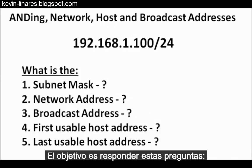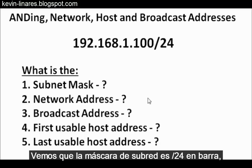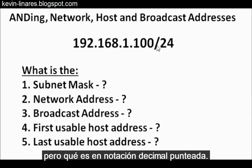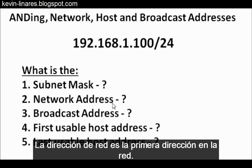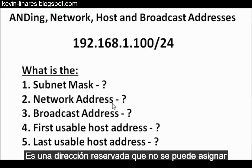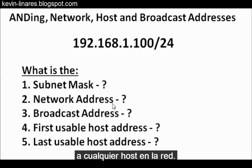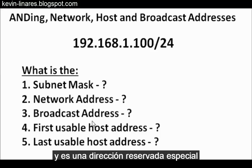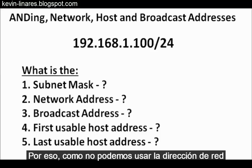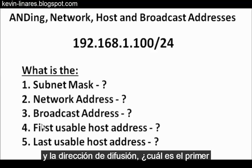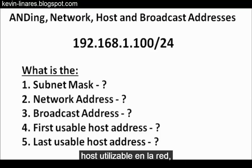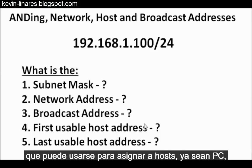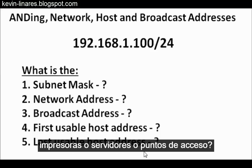Our goal is to answer these questions. What is the subnet mask in dotted decimal notation? What is the network address — the first address in the network, a reserved address that cannot be assigned to any host? What is the broadcast address — the last address in the network, also a reserved address? And what are the first and last usable host addresses we can assign to PCs, printers, servers, or access points?